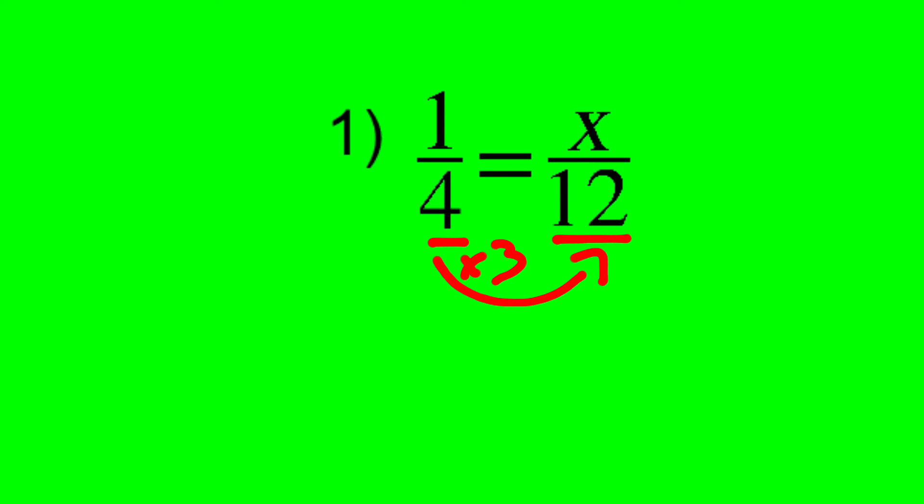Well, I do 4 times 3. And since they're equivalent, I would do the same thing to the top, which means the value of x in this case is equal to 1 times 3, which is 3.